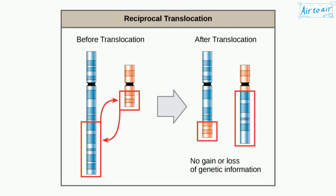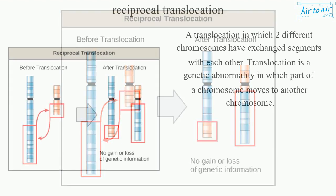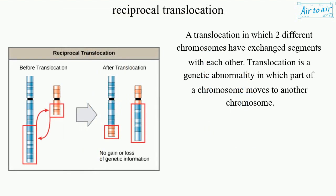Reciprocal Translocation. A translocation in which two different chromosomes have exchanged segments with each other. Translocation is a genetic abnormality in which part of a chromosome moves to another chromosome.